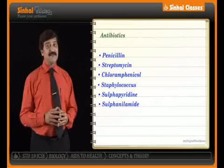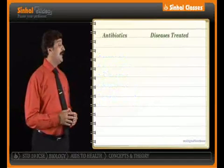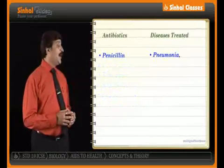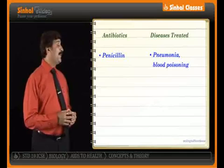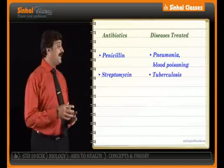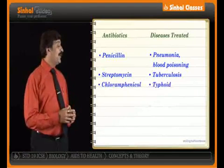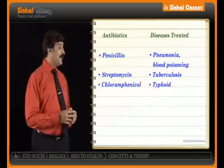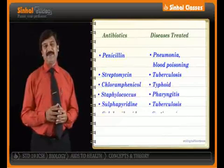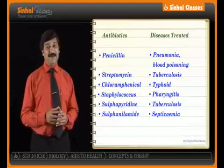These antibiotics play a vital role. For example, Penicillin is used in the treatment of diseases like pneumonia. Streptomycin is used in the treatment of tuberculosis. Chloramphenicol is used in the treatment of typhoid, and Staphylococcus is used in the treatment of pharyngitis.